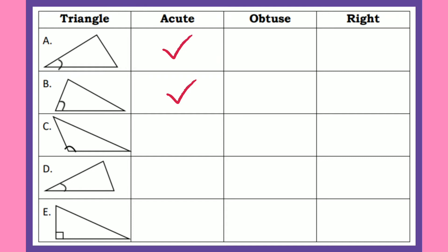Letter C: very good — it's an obtuse triangle. Letter D: yes, an acute triangle. Letter E: very good — it's a right triangle.